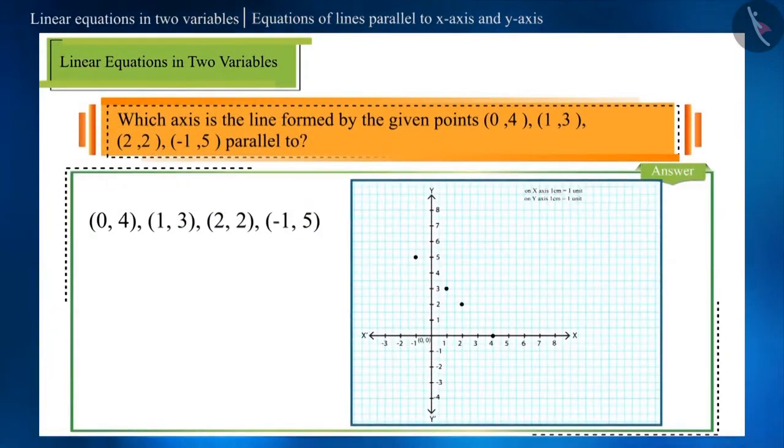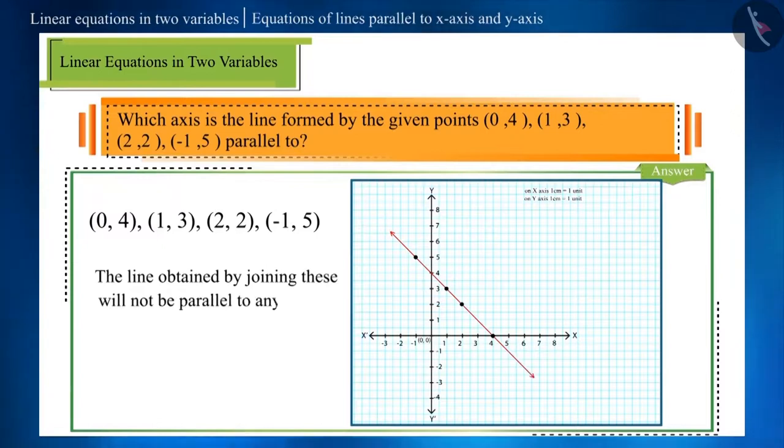Just by looking at these points, we can say that here, both the x-coordinates and the y-coordinates are changing. The line obtained by joining these points will not be parallel to any axis.